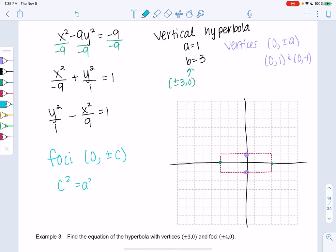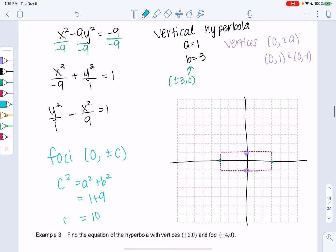So c squared is a squared plus b squared. So in this case, that would be 1 plus 9 or 10. So c is square root 10.